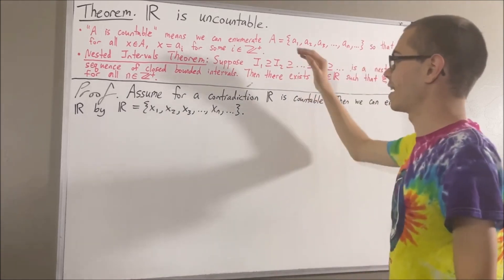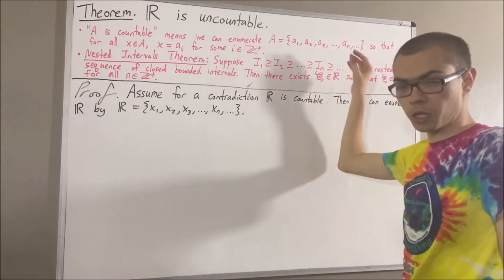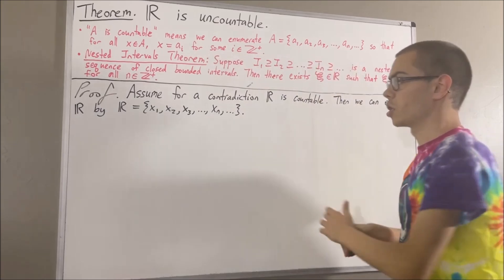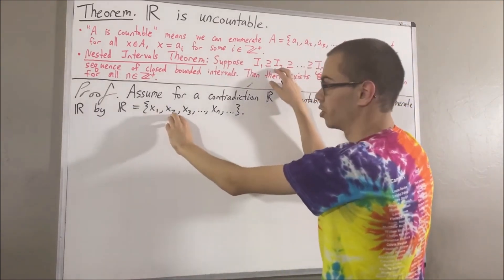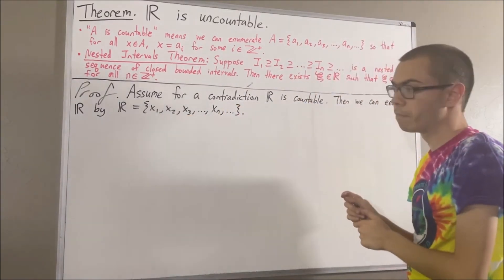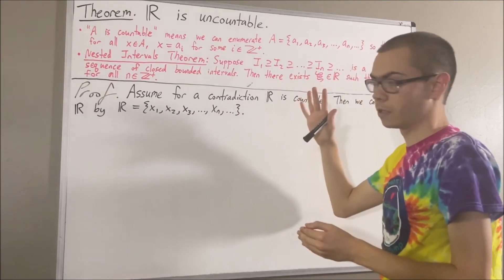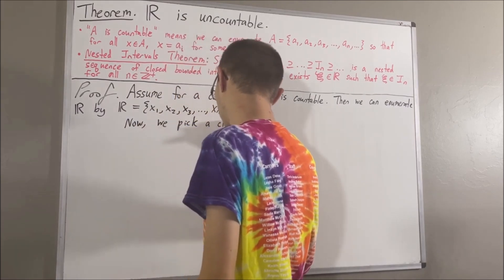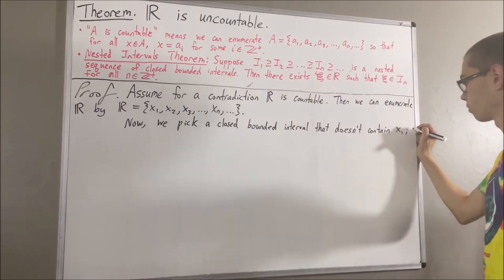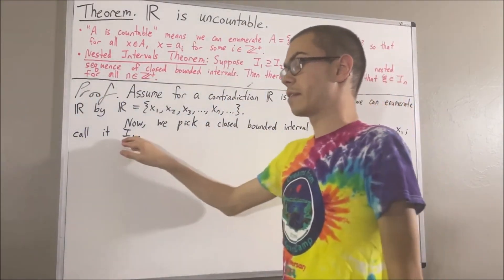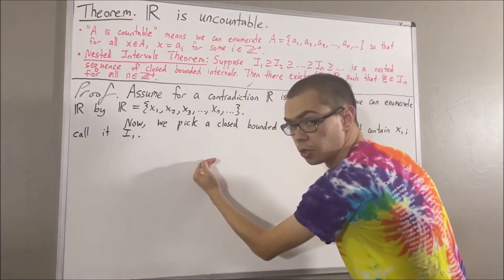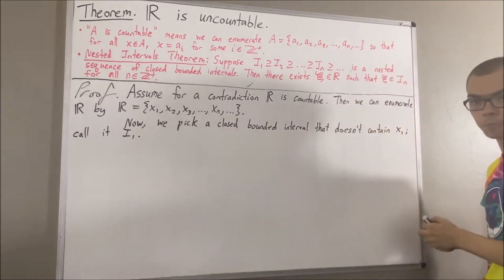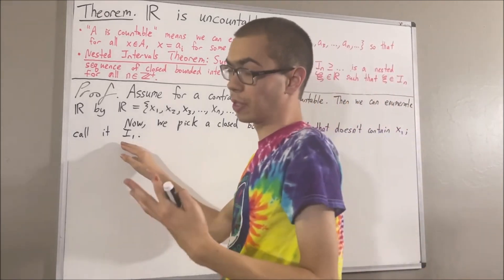So now we are going to construct a nested sequence of closed bounded intervals I1, I2, I3, and so on. We are going to construct this sequence so that x1 does not belong to I1, x2 does not belong to I2, x3 does not belong to I3, and so on. As you can imagine, there has to be some closed bounded interval that does not contain x1 — we'll call that closed bounded interval I1. For example, maybe that closed bounded interval is the interval from x_1 + 1 to x_1 + 2. That closed bounded interval does not contain x1. So I1 is just some closed bounded interval that does not contain x1.